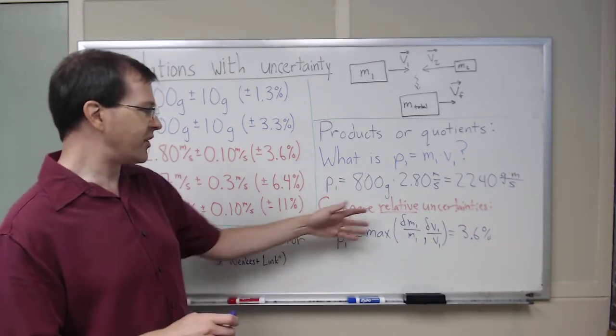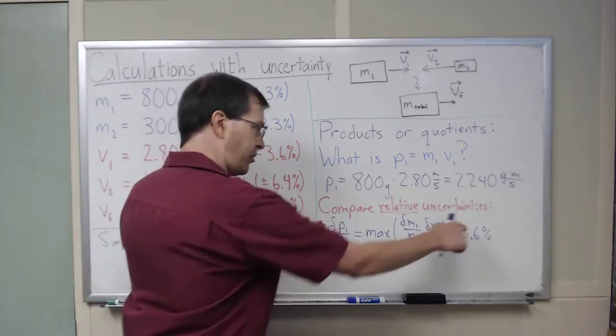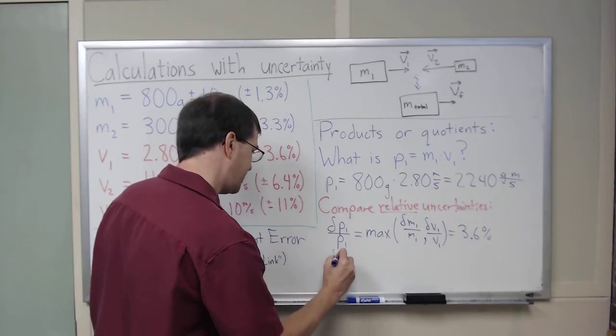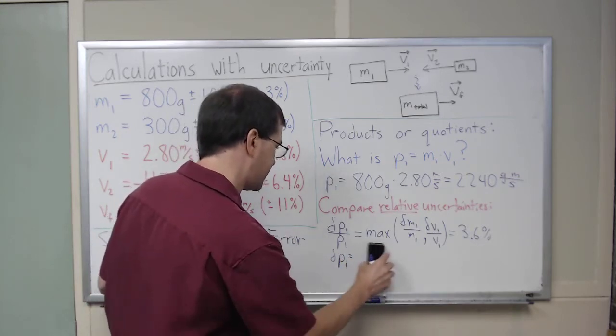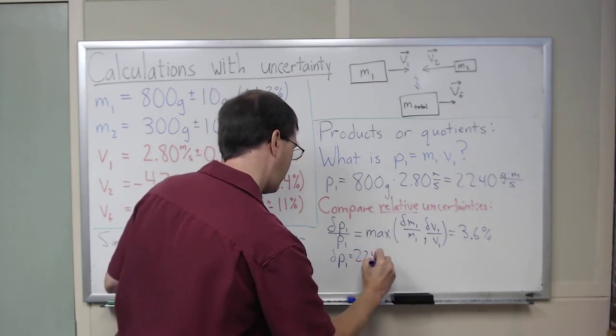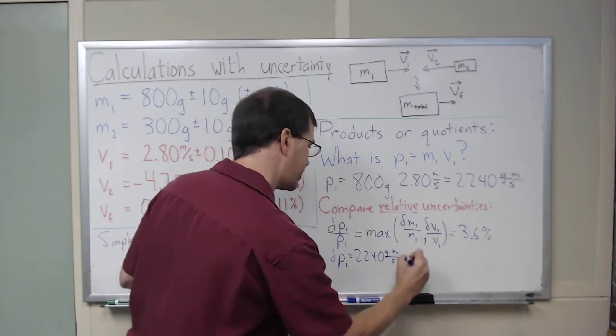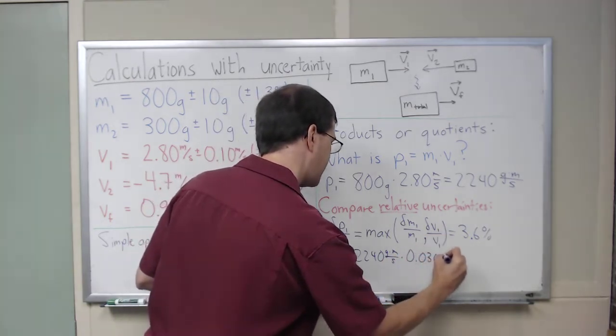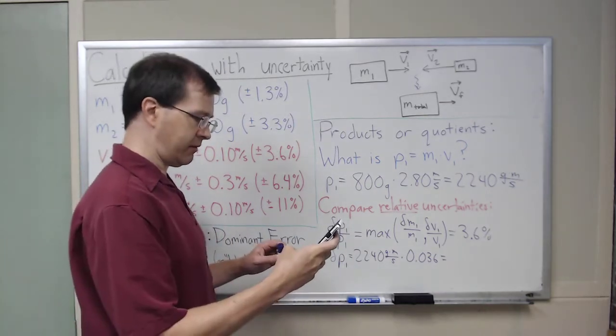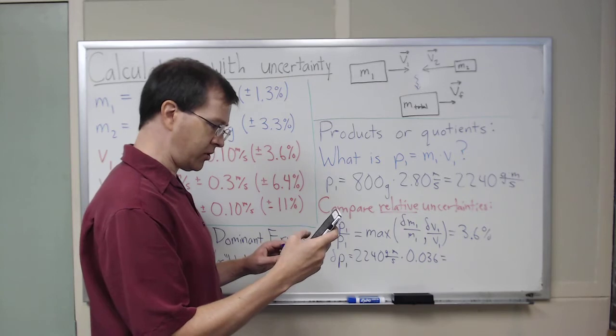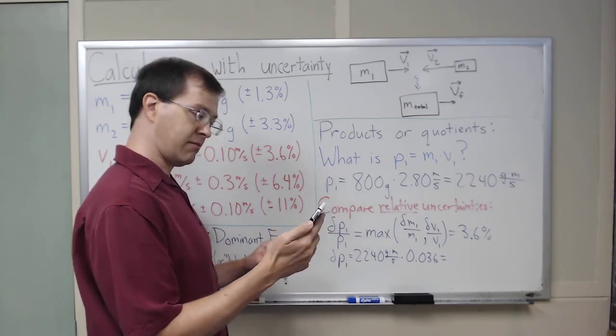That's the relative uncertainty. If I want to know the absolute uncertainty, I just multiply both sides by P1. I do delta P1 equals, I know what P1 is, it's 2240 gram meters per second, times 3.6% is 0.036. I need to pull out my calculator. I've got 2240 times 0.036, I get 80.64.